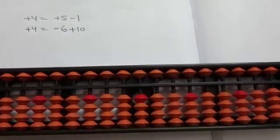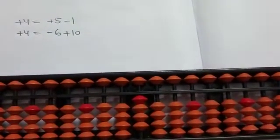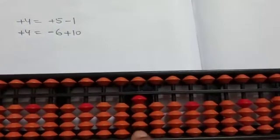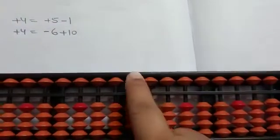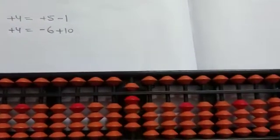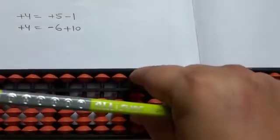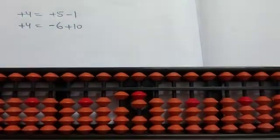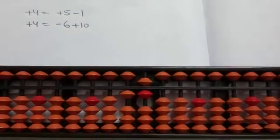We will do the plus 4 table. Plus 4 is direct, but we have no bit, so we are applying the first formula: plus 5 minus 1. Now again, plus 4 is minus 6 plus 10.